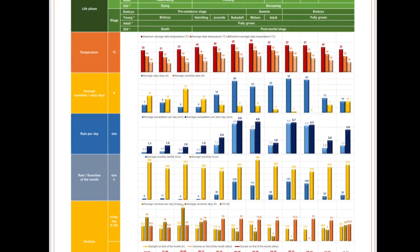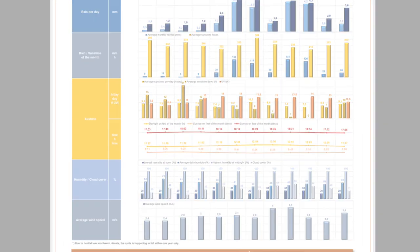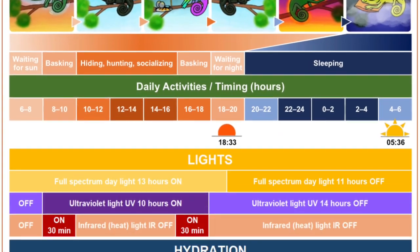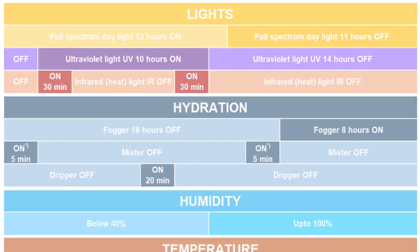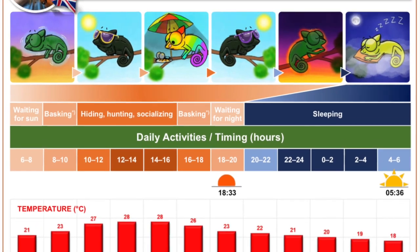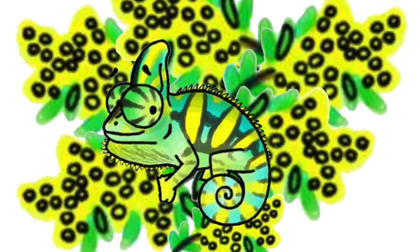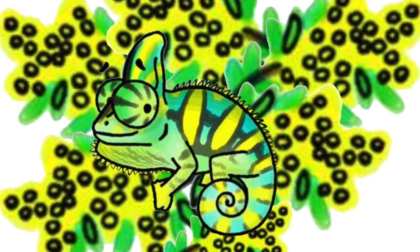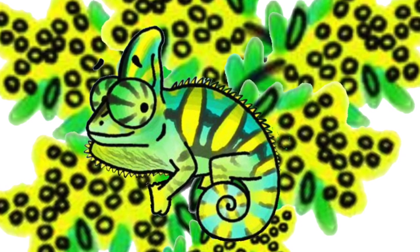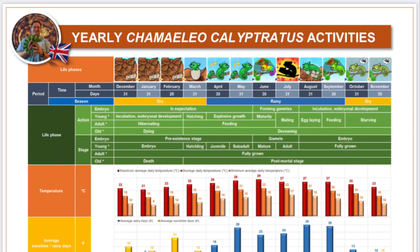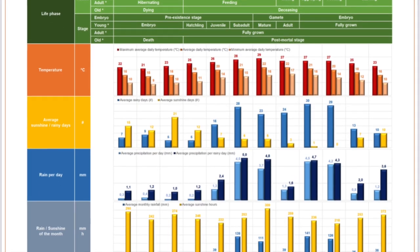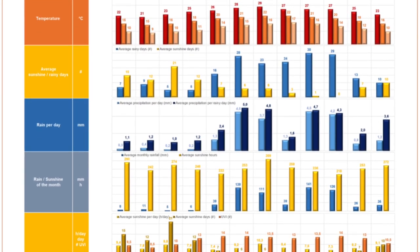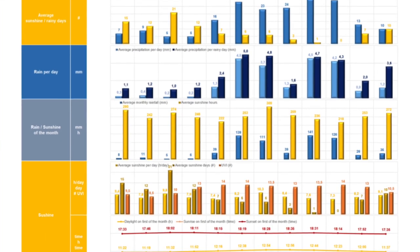Climatic charts and care guidelines were prepared based on which the keeper is clearly guided to understand the difference between the mild rainy season and harsh dry season, and can adjust the care to simulate in a safe way these two seasons, to see and understand the whole climatic gradient during the annual cycle, and is able to simulate the whole year specifics, including adjusting meaningfully the egg incubation accordingly.